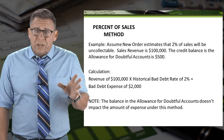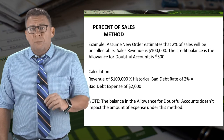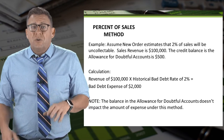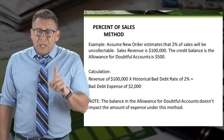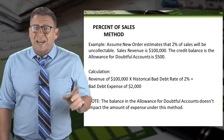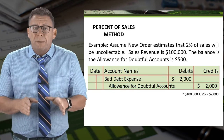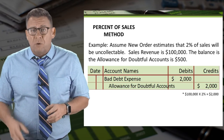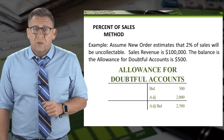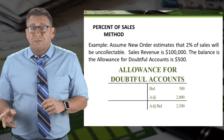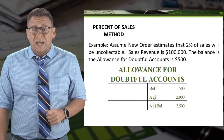So we multiply $100,000 of revenue by the historical bad debt rate of 2% to get $2,000 of bad debt expense. The balance in the allowance account does not impact the amount for this method. So we debit bad debt expense and credit the allowance for doubtful accounts for $2,000. The balance in the allowance for doubtful accounts is now an adjusted balance of $2,500.